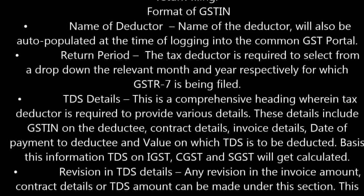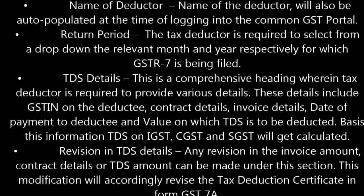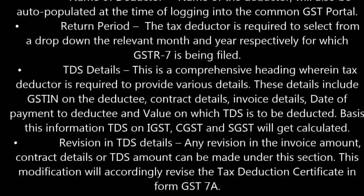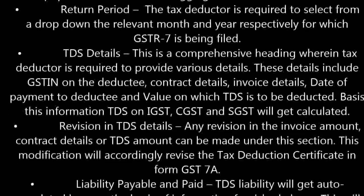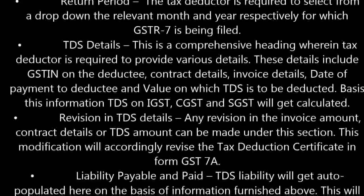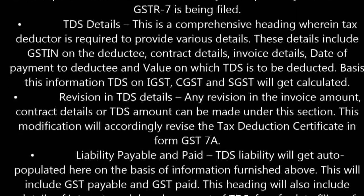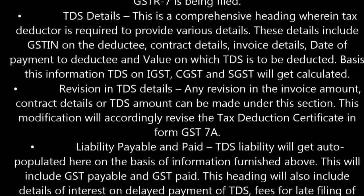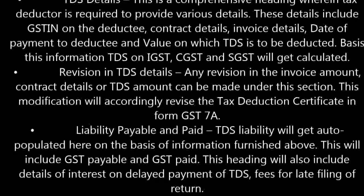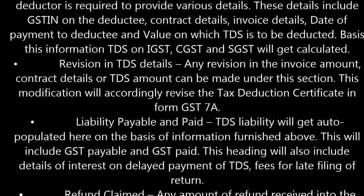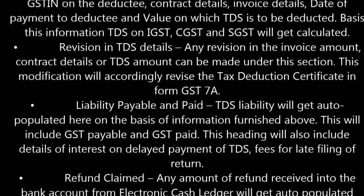Under TDS details, this is a comprehensive heading wherein the tax deductor is required to provide various details. These details include GSTIN of the deductee, contract details, invoice details, date of payment to the deductee, and the value on which TDS is to be deducted. Based on this information, TDS on IGST, CGST, and SGST will get calculated.